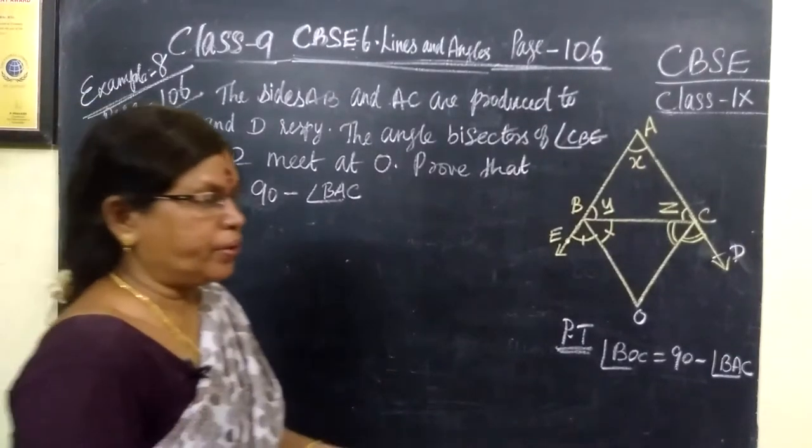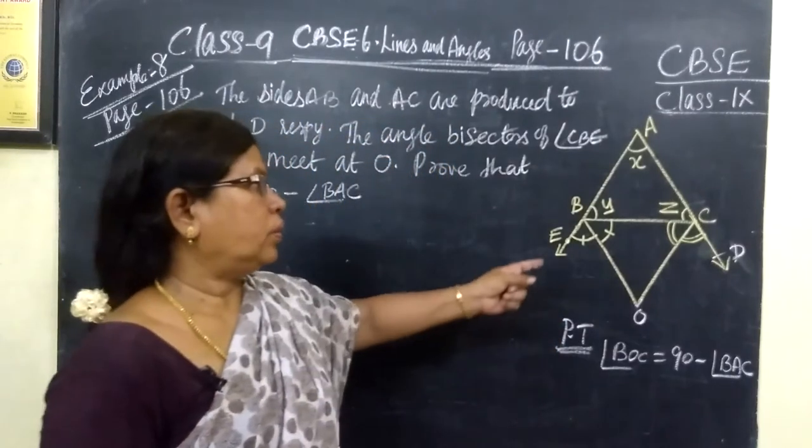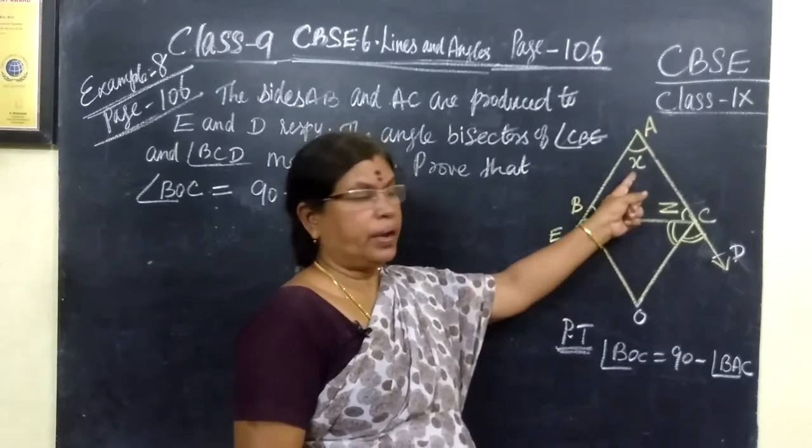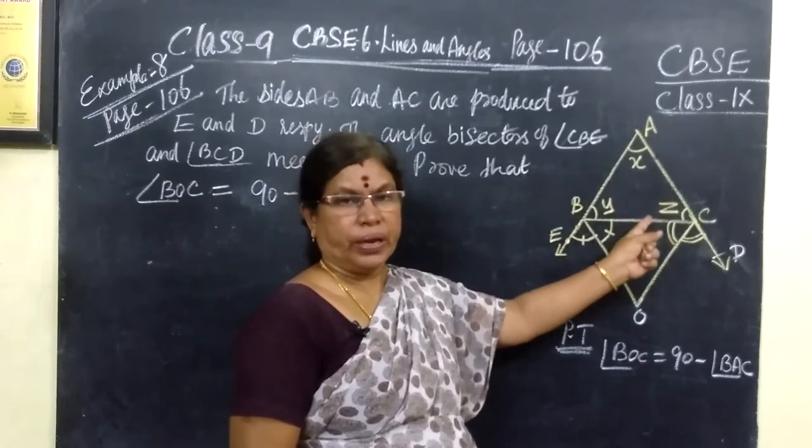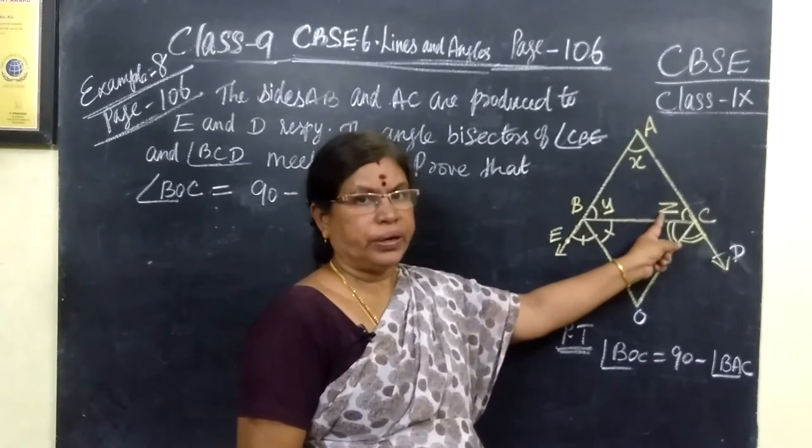So, example 8 in page number 106. In this figure, here the triangle ABC, the angles are X, Y, Z. We know sum of the angles 180 degree in a triangle, so X plus Y plus Z equal to 180 degree.